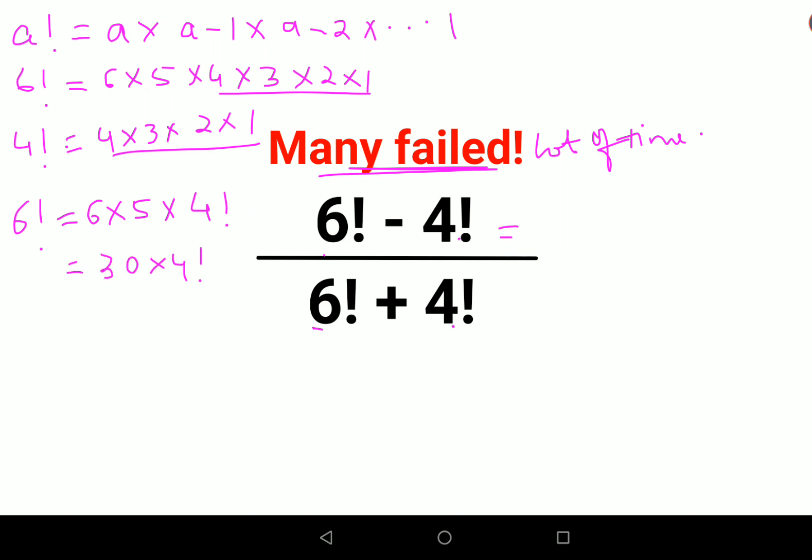So let's write it. This is what? 30 into 4 factorial minus 4 factorial. Here also 30 plus 4 factorial minus 4 factorial. Here also we will first have 30 into 4 factorial plus 4 factorial.